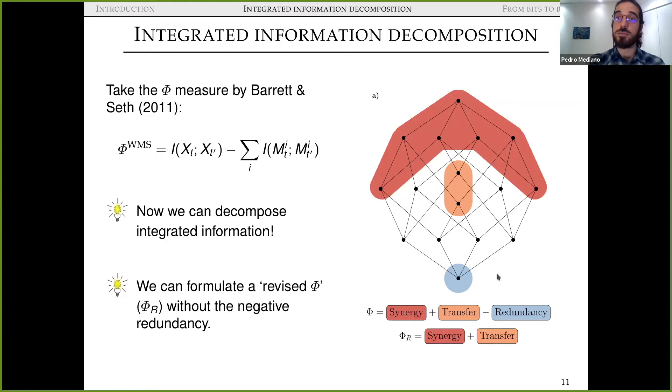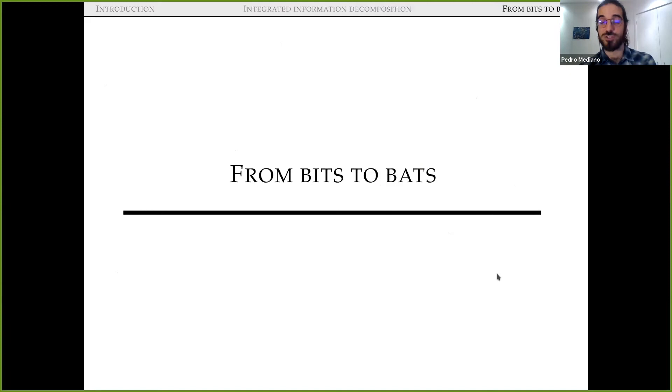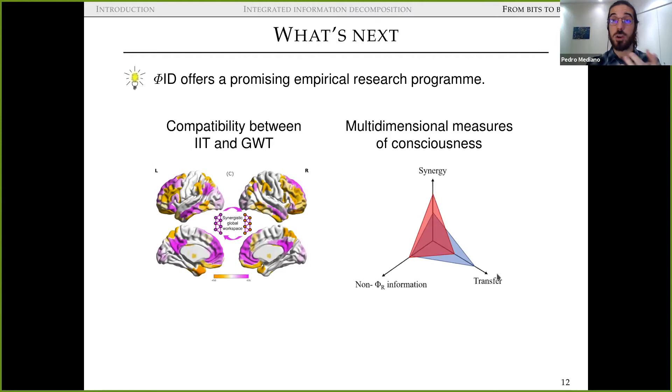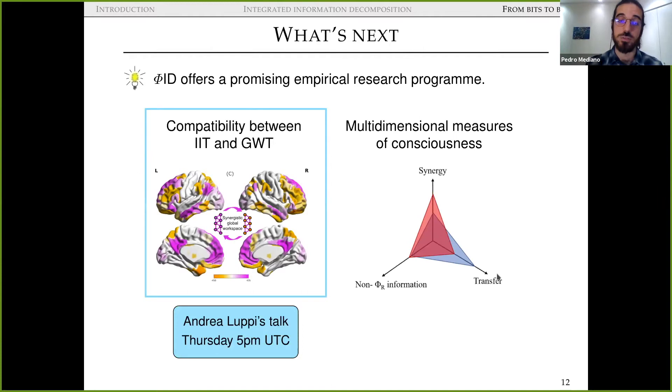All right, so now that we have put together all these phi-ID infrastructure, we can then move on to the more consciousness-centric topics. So what's next? What can we do with this framework in terms of consciousness science? I argue, and my collaborators have been working on the possibilities that phi-ID offers for an empirical research program on consciousness. And we're going to see two applications of this phi-ID method in this conference. First of all, one thing that we can do is we can talk about compatibilities between IIT and global workspace theory. If you're interested in this, you should go and check out Andrea Lupo's talk on Thursday at 5pm UTC. And in here, what I'm particularly interested to tell you today is about how phi-ID can enable a multidimensional view of consciousness, and it can span an array of multidimensional measures of consciousness.